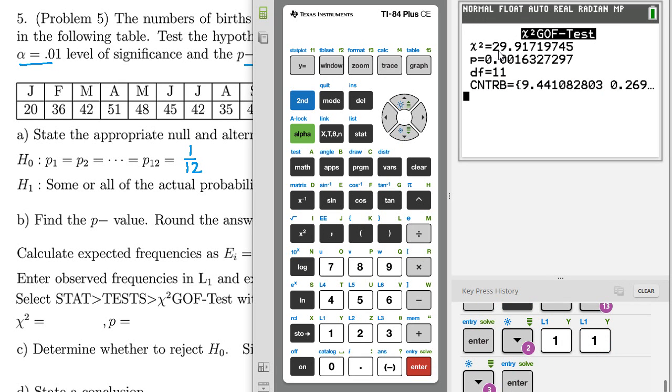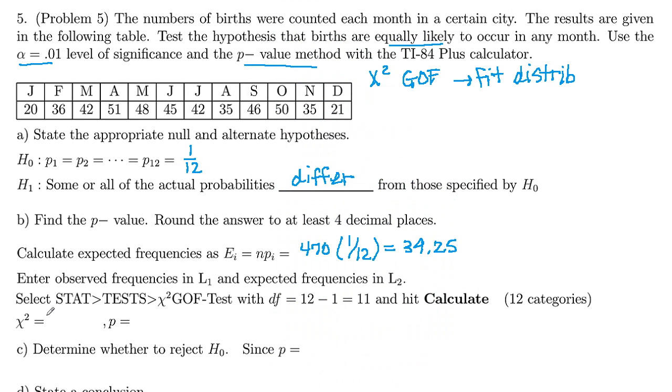And here we see our chi-squared test statistic is 29.917 and our p-value 0.0016. So chi-squared equals 29.92, p-value equals 0.0016. So we've calculated our p-value here.